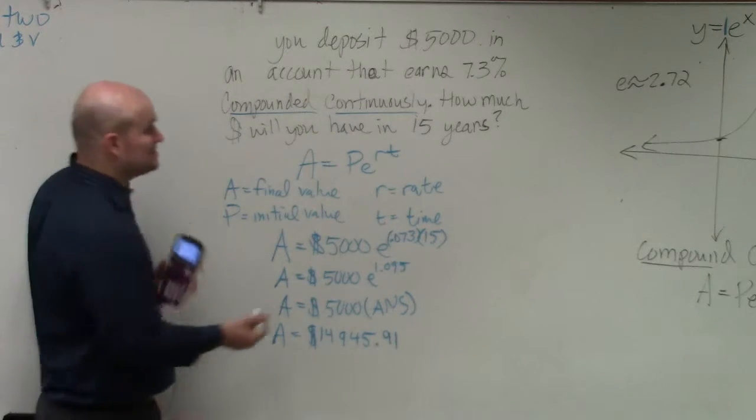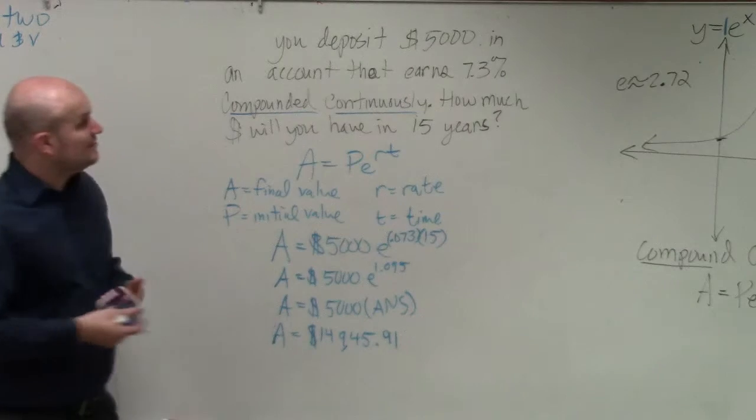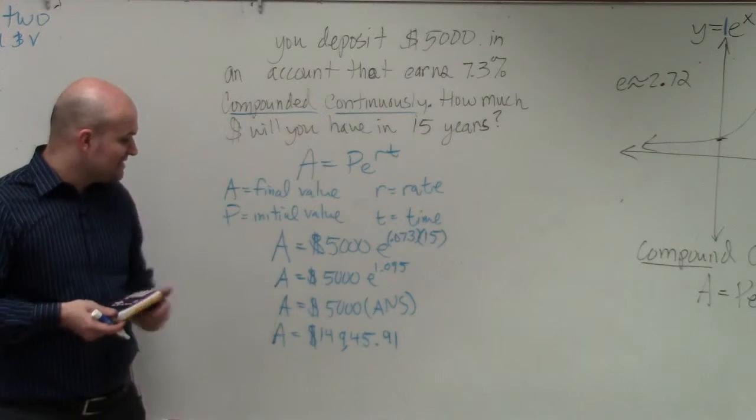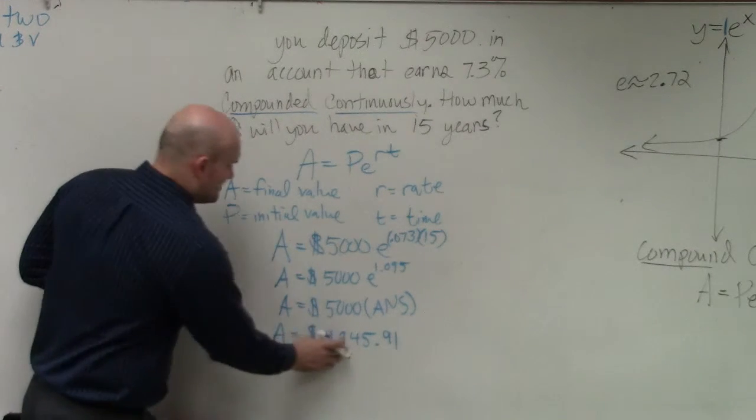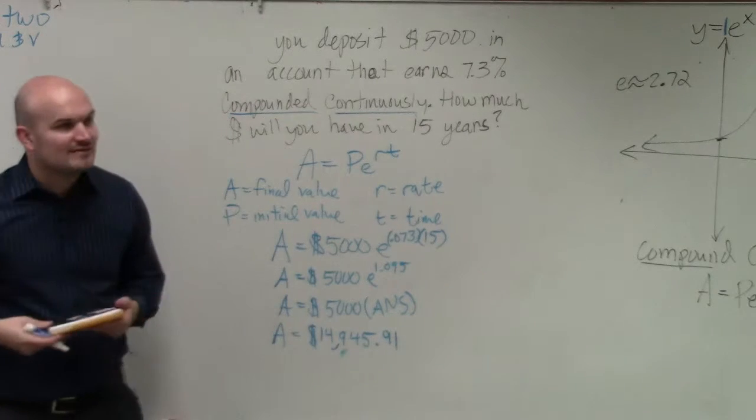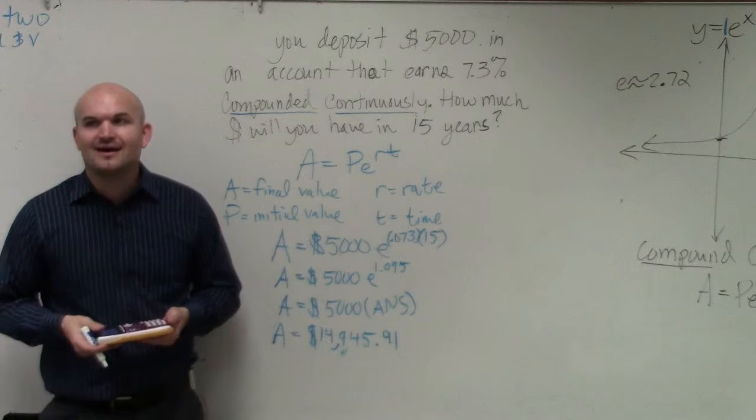So therefore, you'd have 14,000. So therefore, ladies and gentlemen, if you're earning an account 7.3%, you put in $5,000, you have $14,945 for doing nothing.